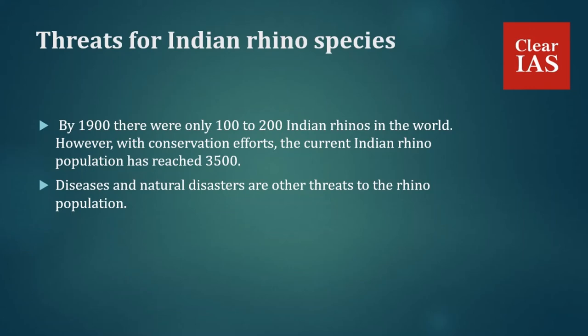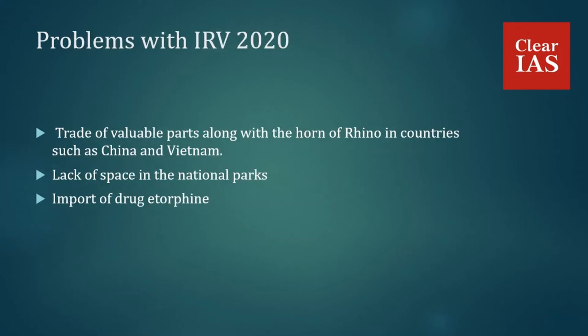Regarding problems with IRV 2020: the trade in rhino horn, which is in demand in countries such as China and Vietnam, is a major roadblock. The lack of space in national parks such as Kaziranga and Pobitora is an emerging problem, which can increase human-animal conflict.